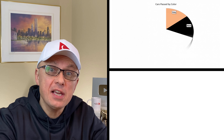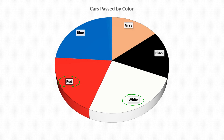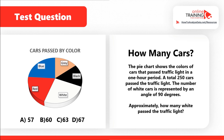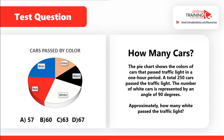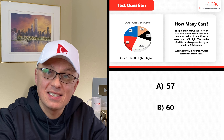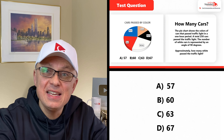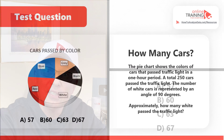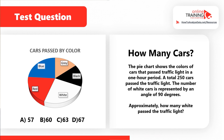A lot of times you get tested on your ability to analyze charts and graphs. In this question, we see a pie chart broken down into parts shown in different colors: white, red, blue, gray, and black. The pie chart shows the colors of cars that passed a traffic light in one hour. A total of 250 cars passed. The number of white cars is represented by an angle of 90 degrees. Approximately how many white cars passed the traffic light? You are presented with four choices: A — 57, B — 60, C — 63, and D — 67.